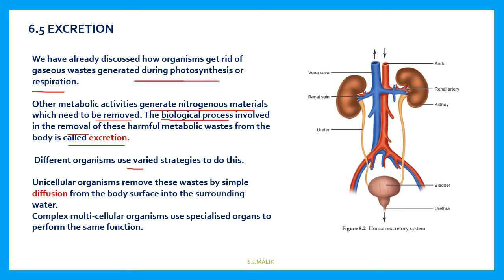Different organisms use varied strategies to do this. All organisms are not the same, and the process of excretion is also not the same. In unicellular organisms, waste is removed by simple diffusion — the waste material comes out of the body and mixes with the water. In complex multicellular organisms, special organs are used to perform the same function.